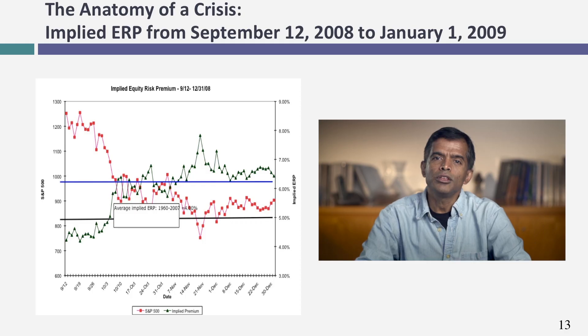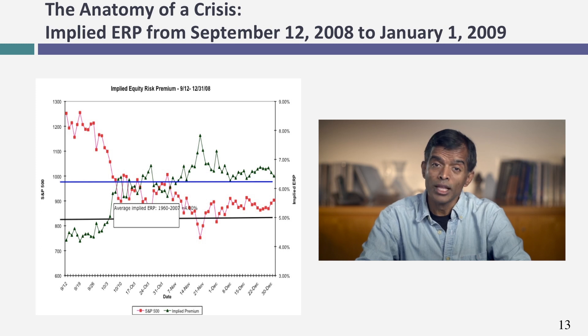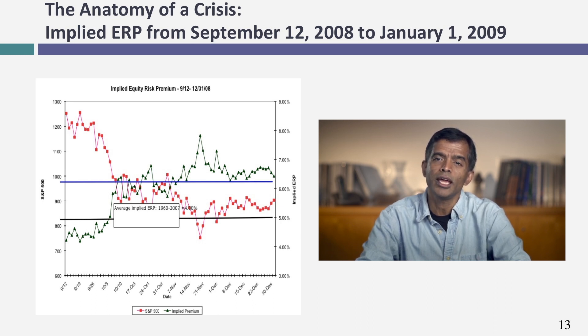Let me go back to my implied equity risk premium. I said it's a forward-looking dynamic number — just how dynamic? Let me show you a period in history that illustrates this. In the last quarter of 2008, starting September 12th — the Friday before the Lehman collapse — through the end of November, the equity risk premium started at 4.37%. I computed it every day through the crisis. By November 2008, just two and a half months later, the implied premium in the U.S. hit 8% — it almost doubled. That's why we compute dynamic, forward-looking premiums: because the world can shift around you, and your equity risk premium should shift as well.